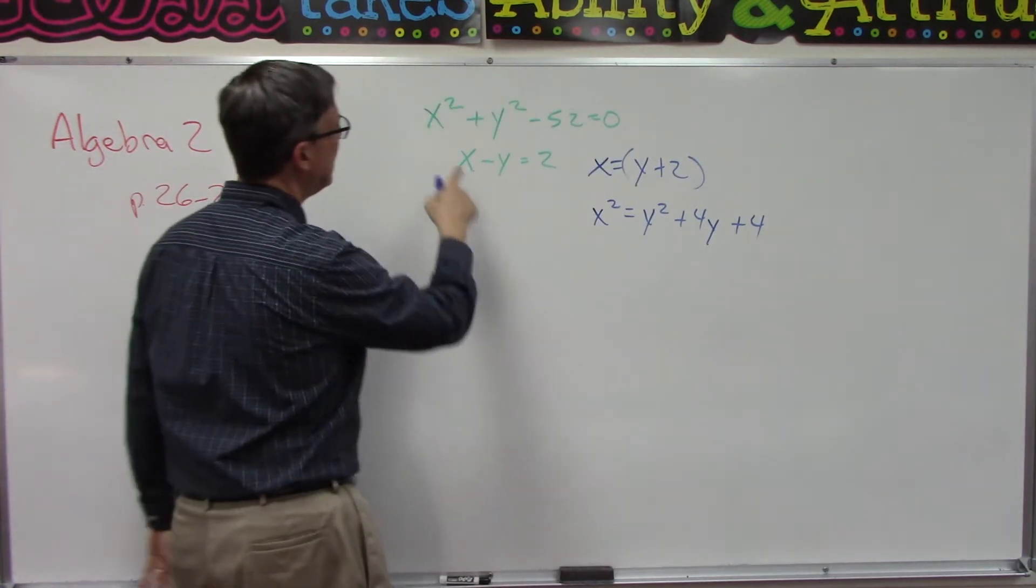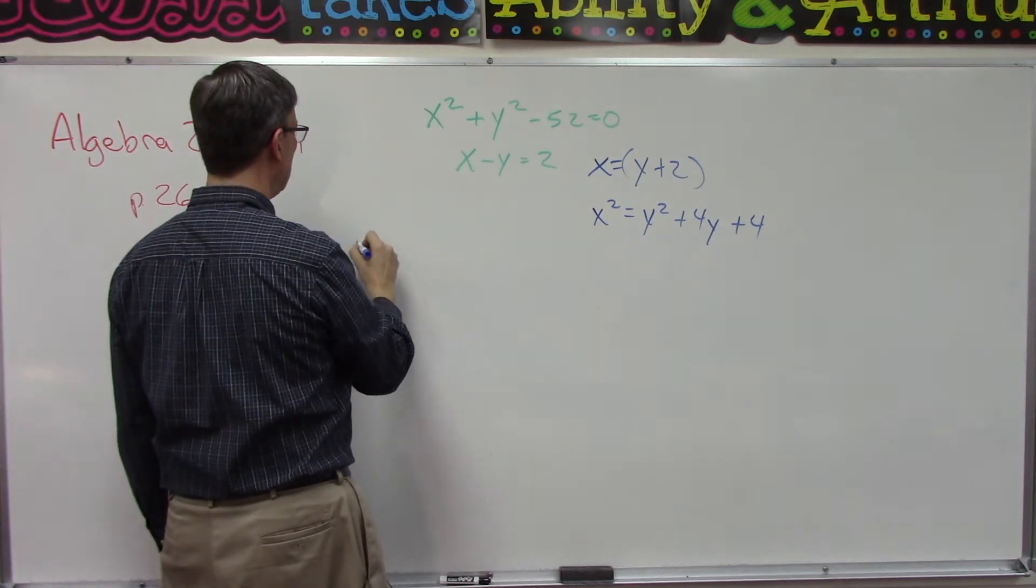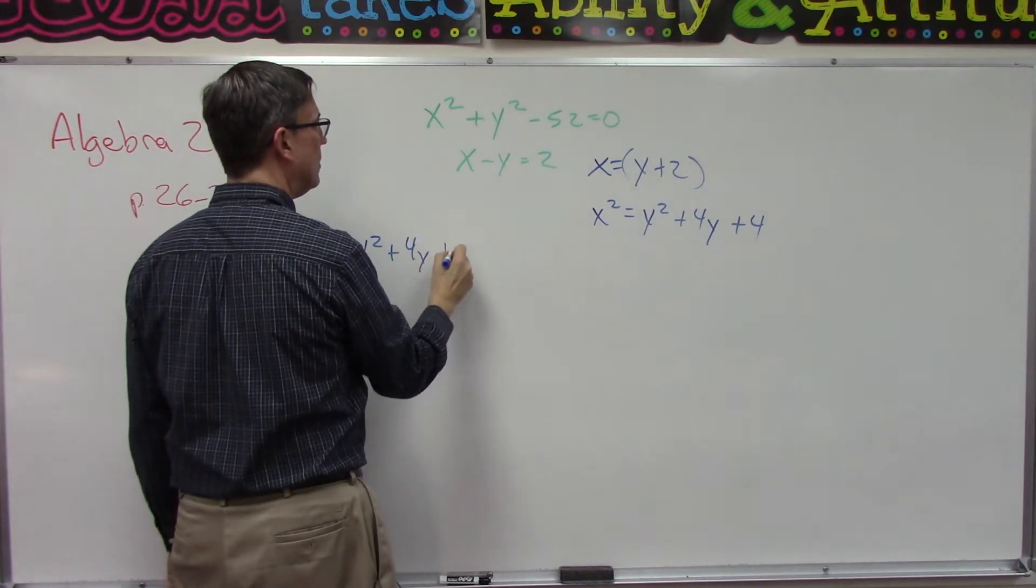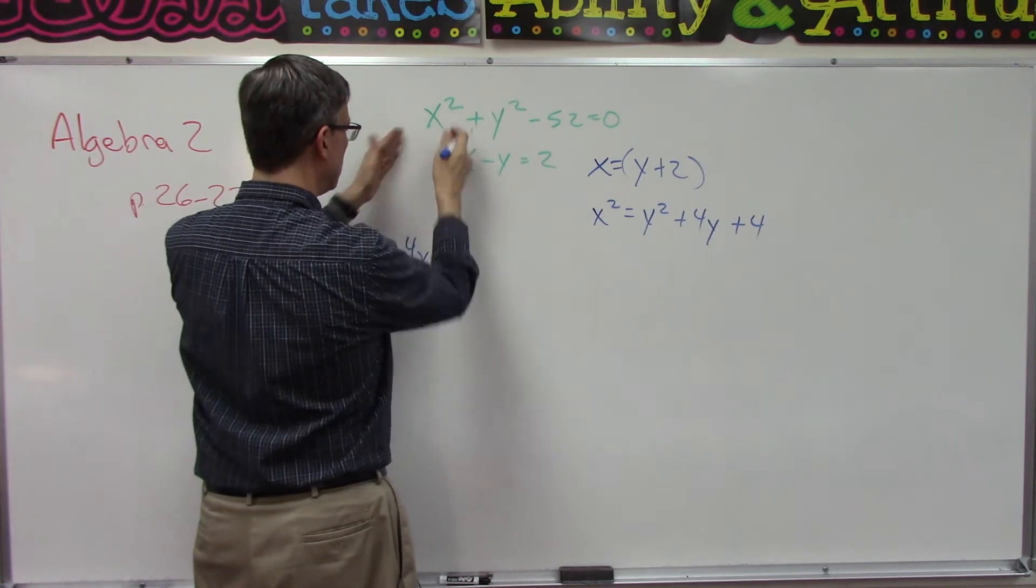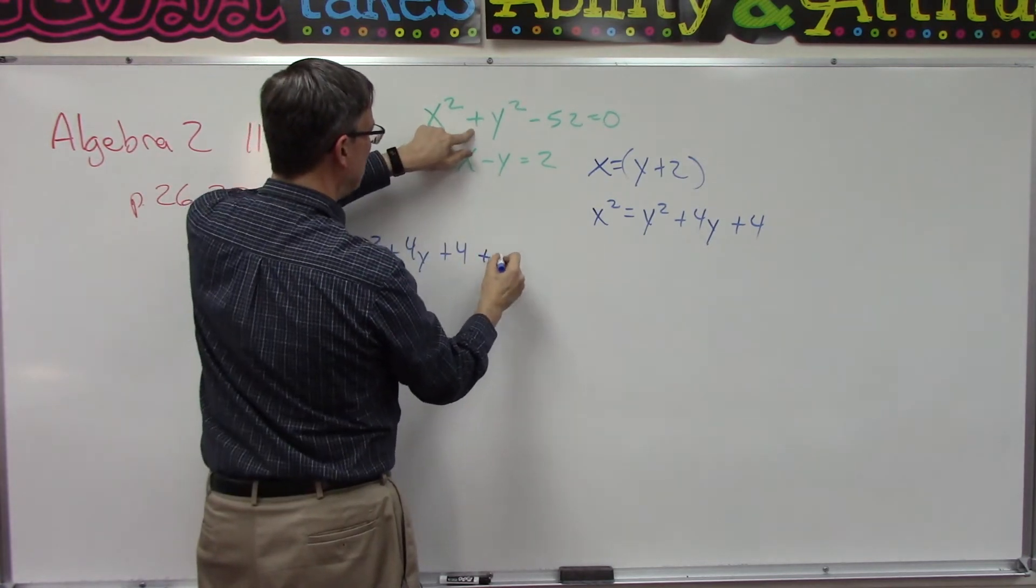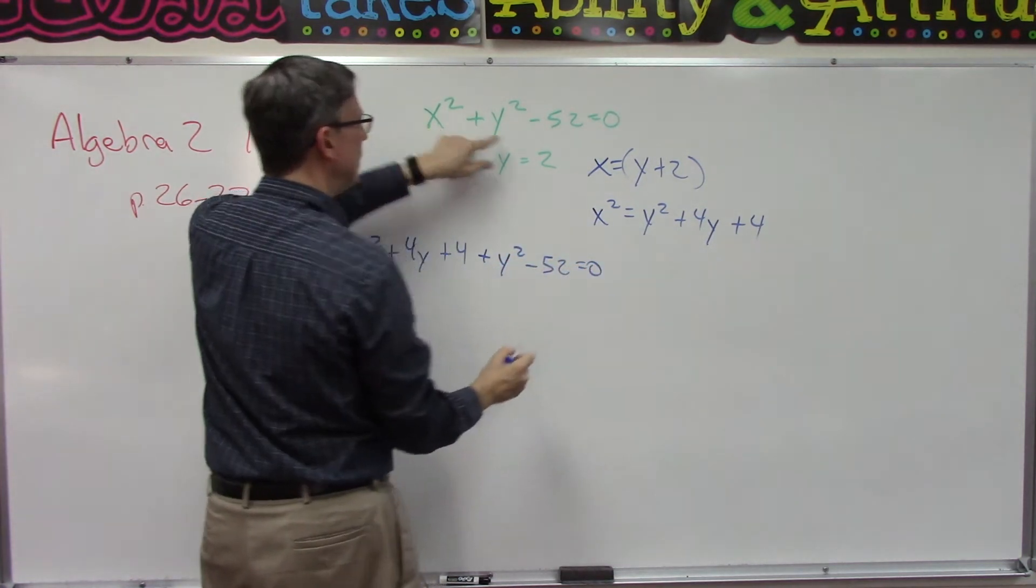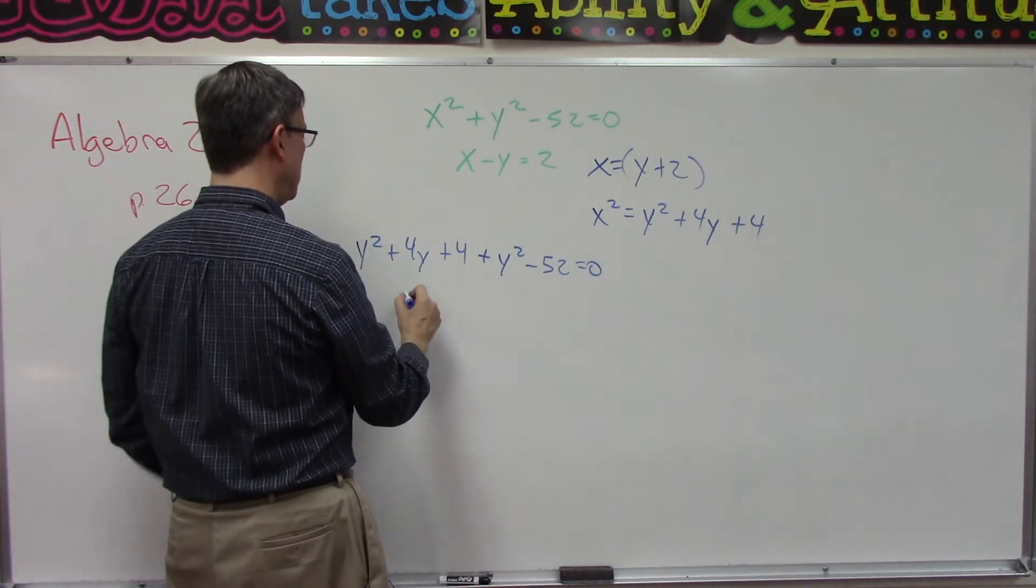Now we can take this whole quantity, which is what x squared equals, and plug it in up here in place of the x squared. So watch this—I'm going to write y squared plus four y plus four. So that whole thing is the x squared. You see that? Now I'm going to finish this problem plus y squared minus 52 equals zero.